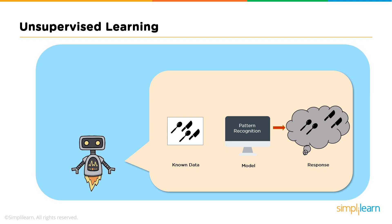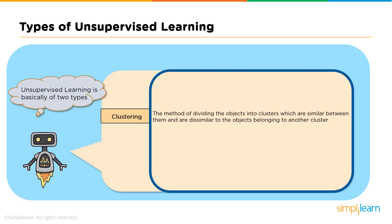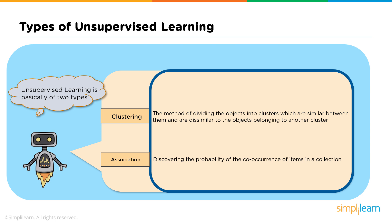Unsupervised learning can be further grouped into clustering and association. Clustering is where the machine forms groups based on the behavior of the data. Association is a rule-based machine learning approach to discover interesting relationships between variables in large datasets. For example, which customers made similar product purchases is clustering, whereas which products were purchased together is association.